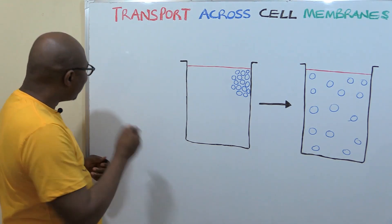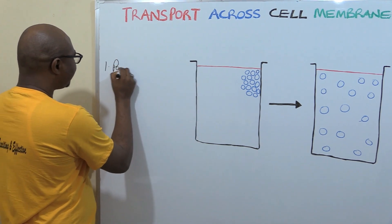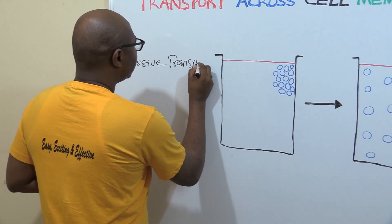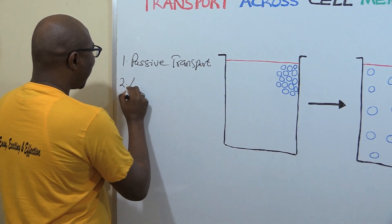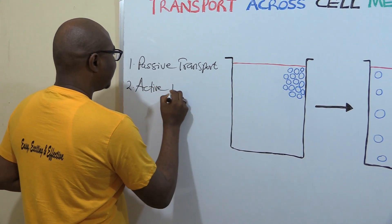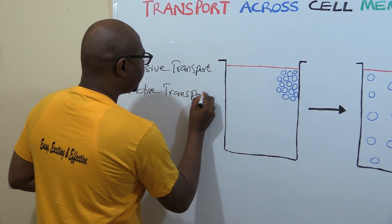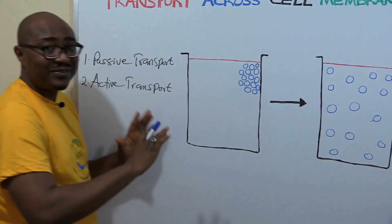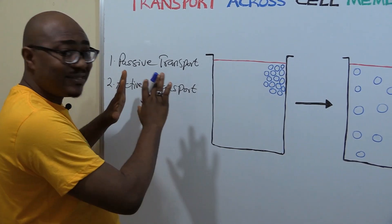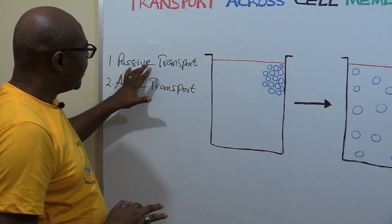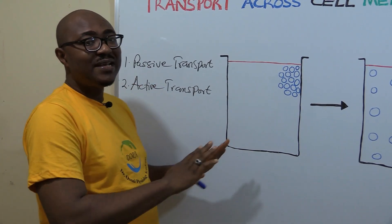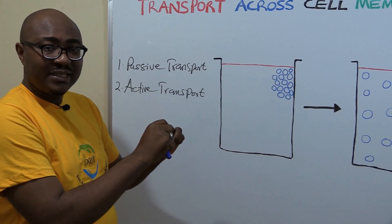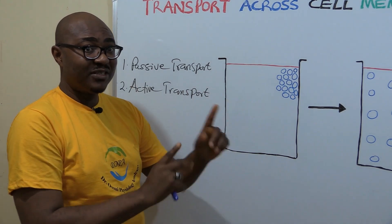There are two broad types of transport across the cell membrane. One of them is passive transport, and the other is active transport. The difference between these two is based on their relationship with the energy that powers their movement or transport.